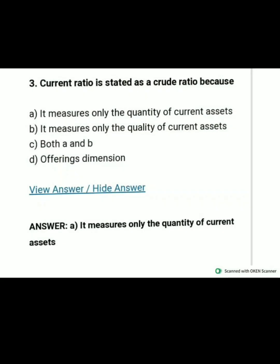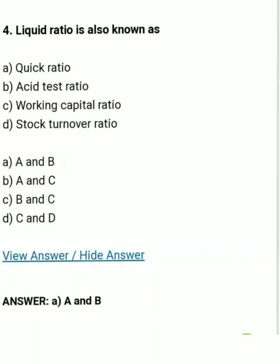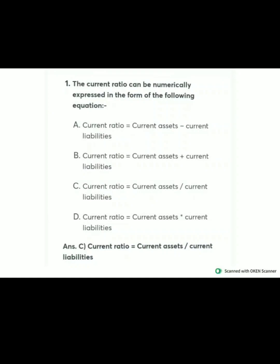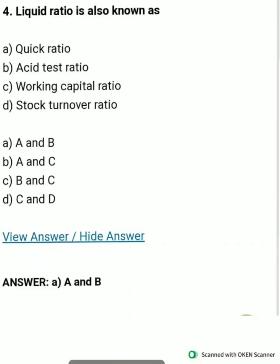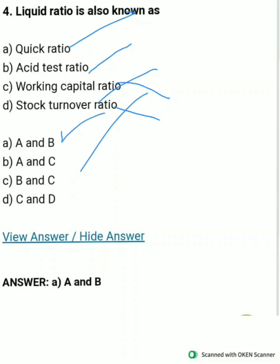Current ratio is stated as a crude ratio because it measures only the quantity of current assets. Liquidity ratio is also known as quick ratio because it can quickly be converted into cash. It is also called the acid test ratio. It is not called working capital ratio or short-term stock turnover ratio. Here options A and B are correct.